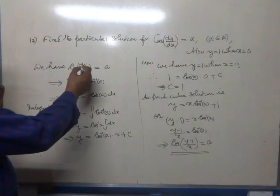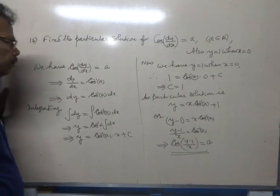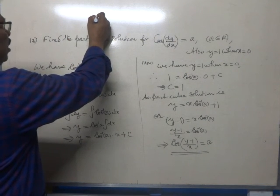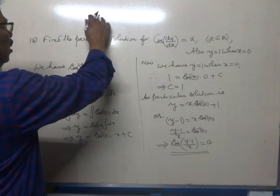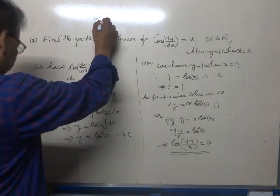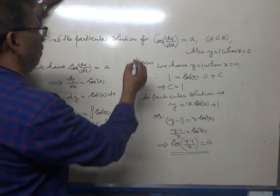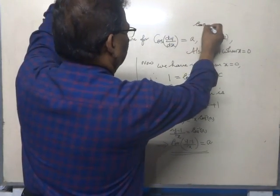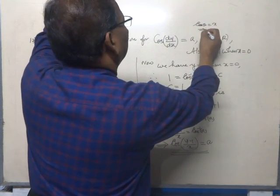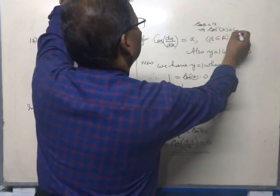Now cos(dy/dx) equals a, therefore dy/dx must be cos inverse a. If cos theta is equal to x, then cos inverse x will be equal to theta.